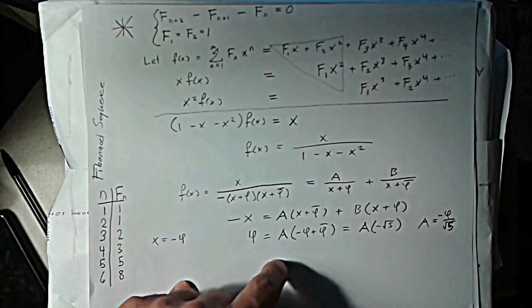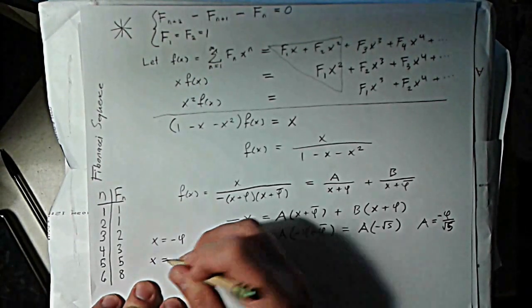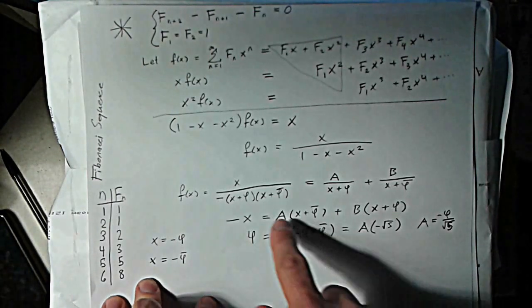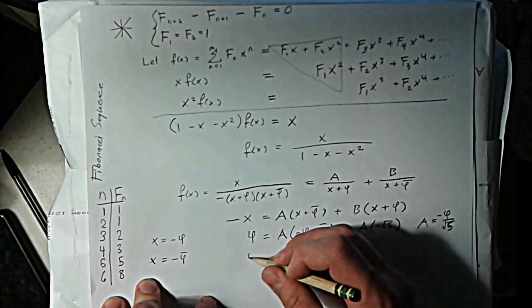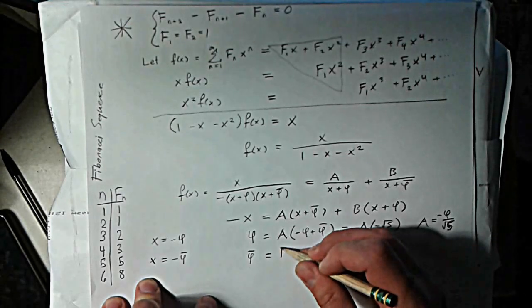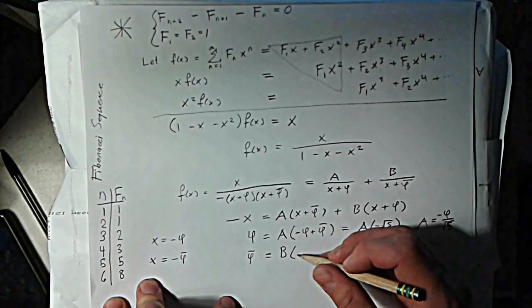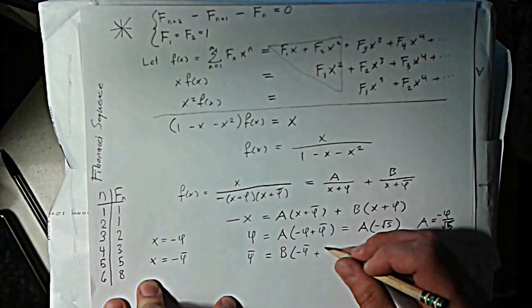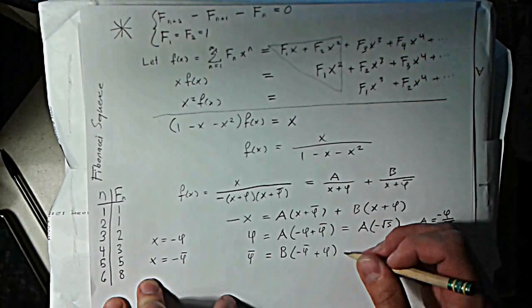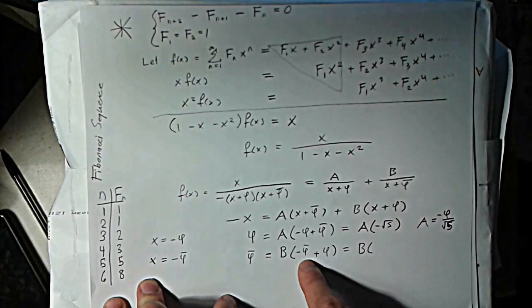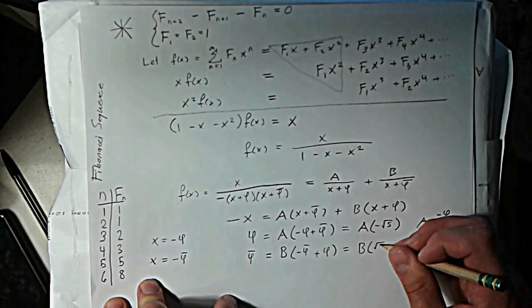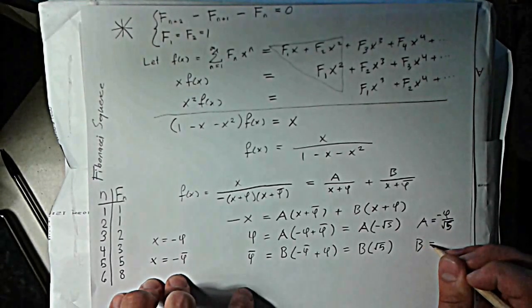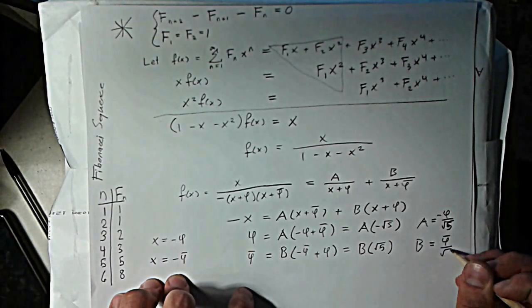So then we can do the same thing to figure out what B is. You plug in x is equal to negative golden ratio conjugate, and that'll cause these ones to cancel out, and you'll just see that golden ratio conjugate is equal to B times negative golden ratio conjugate plus golden ratio. And this is just root 5. And so if you're solving for B, you'll see that B is just equal to golden ratio conjugate over root 5.